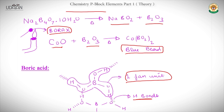Counting the six hydrogen bonds in boric acid: this one is first, two, three, four, and this one will be five, and this one will be the sixth.